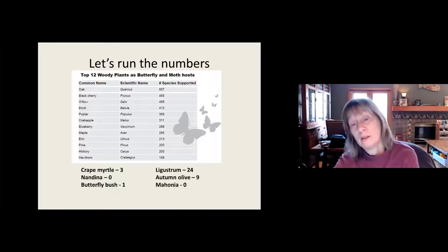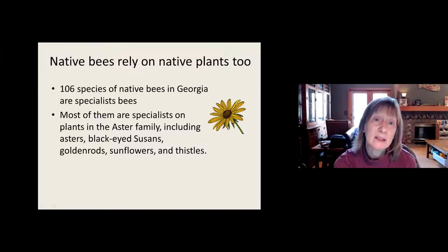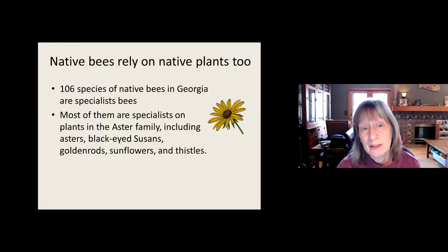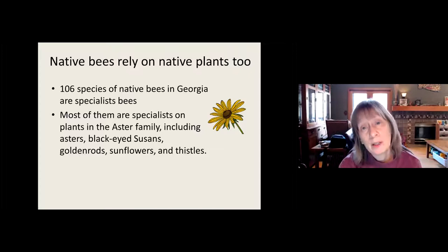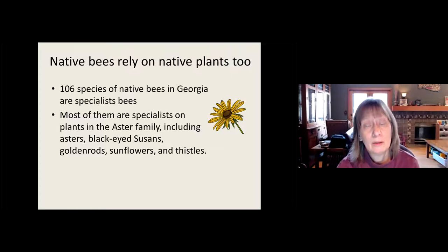Native bees also rely on native plants. There are 106 species of native bees in Georgia that are specialists — meaning they need specific plants even for their nectar and pollen gathering. Most of them are specialists on plants in the aster family, which is huge in North America. It includes asters, black-eyed Susans, goldenrods, sunflowers, thistles, coneflowers, and bonesets — a very popular perennial family and great to have for native bees.